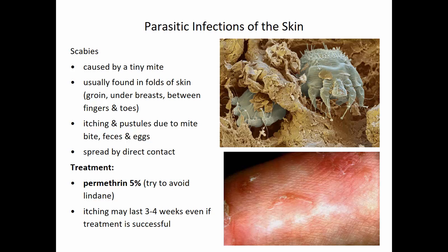The last section covers parasitic infections of the skin. The first is scabies, caused by a tiny mite. These mites are usually found in warm, moist places — folds of skin such as the groin area, under breasts, or between fingers and toes. The mites burrow underneath the surface of the skin, creating tunnels as they go, and they bite, lay eggs, and drop waste products, causing pustules to form and itching.